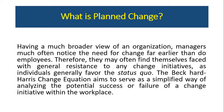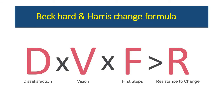The Beckhard and Harris mathematical formula — or change equation — aims to serve as a simplified, easy way of analyzing the potential success or failure of a change initiative within the workplace. This formula helps organizations bring change in the working environment. The formula is: D times V times F is greater than R. D stands for dissatisfaction, V stands for vision, F stands for first steps, and R stands for resistance to change.